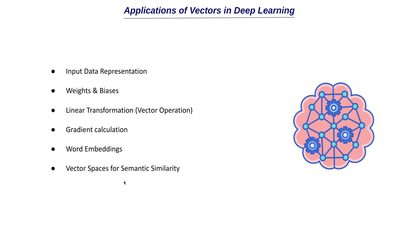These are the main applications of vectors in deep learning. I hope you now clearly understand why we need to learn about vectors and how they are used. In the upcoming videos we will cover vector operations in the next video, and topics like linear transformation, gradient calculation, and word embeddings will be covered in their respective sections — word embeddings and vector spaces in the NLP part, and gradient calculation when we discuss training a neural network in detail. I hope everyone is clear, and I'll see you in the next upload. Thanks for watching.